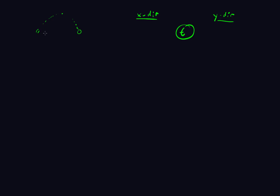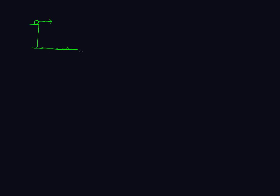An easier example is an object shooting off a cliff horizontally. In this case, all the initial velocity is in the X direction — say VX = 5 m/s — and the initial velocity in Y is 0. These values depend on your specific situation.